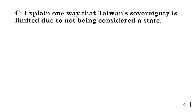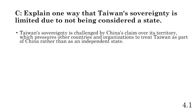Part C: explain one way that Taiwan's sovereignty is limited due to not being considered a state. Taiwan's sovereignty is essentially at the hands of China — China has final say. Taiwan's sovereignty can be challenged by China's claim over its territory, pressuring other countries and organizations to treat Taiwan as a part of China rather than an independent state, which goes back to that recognition aspect of being a state.